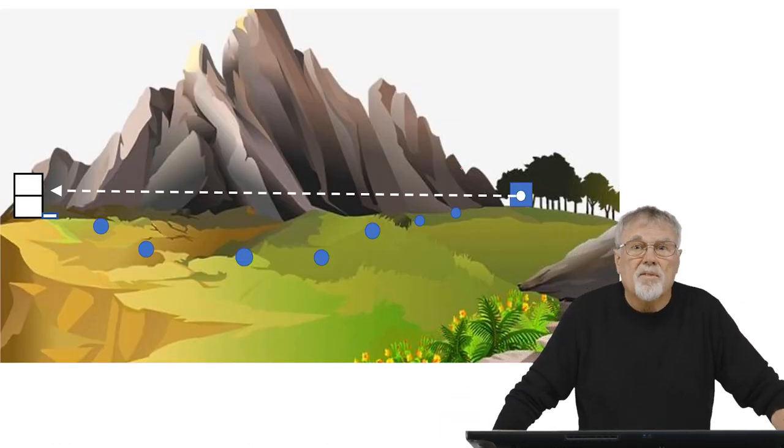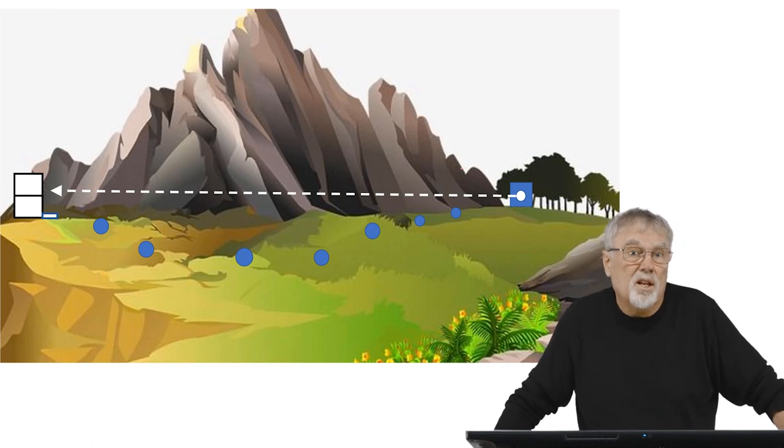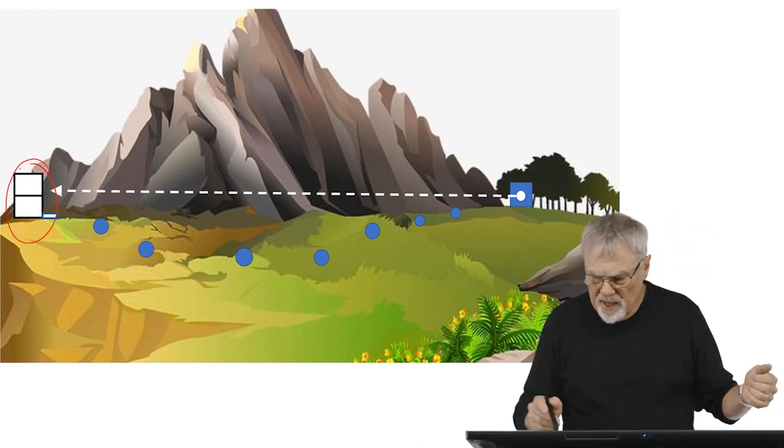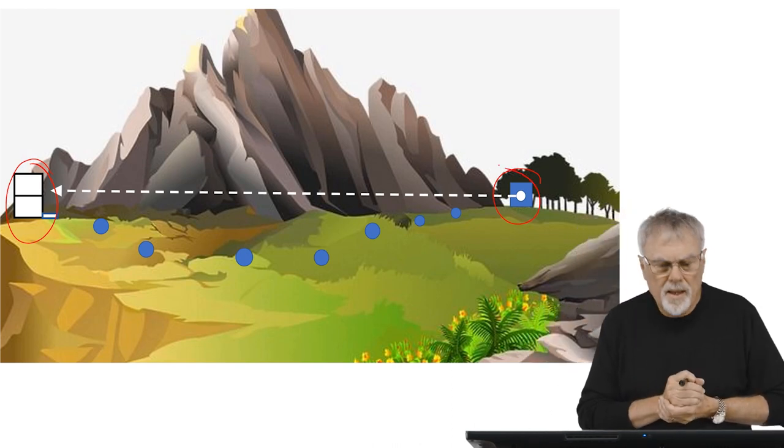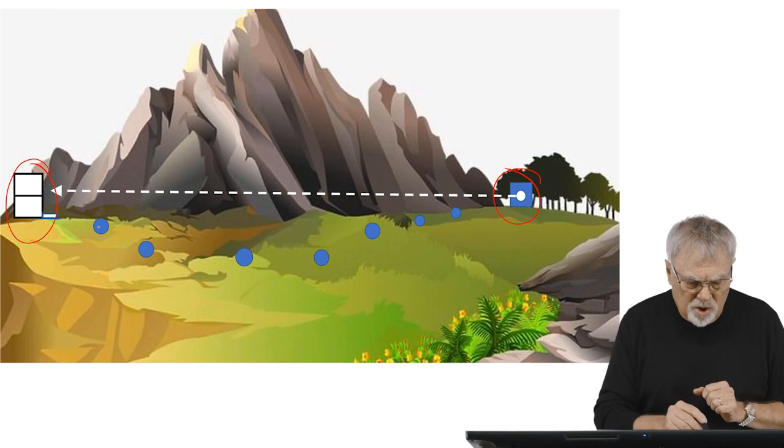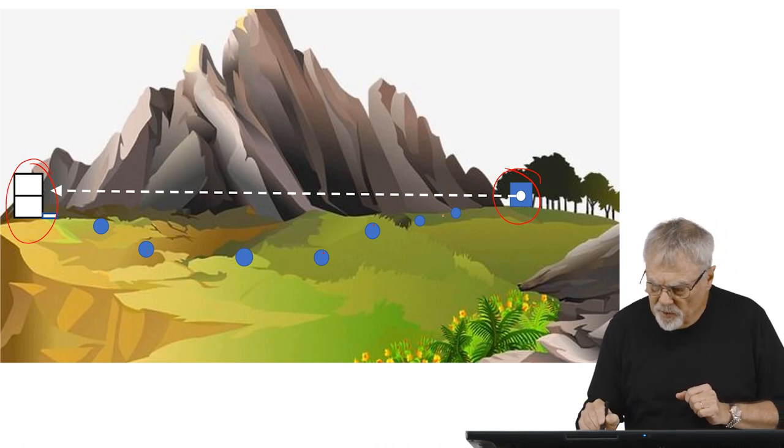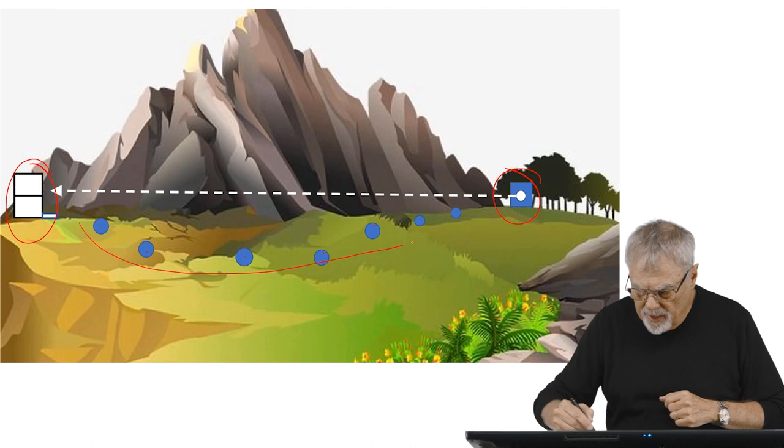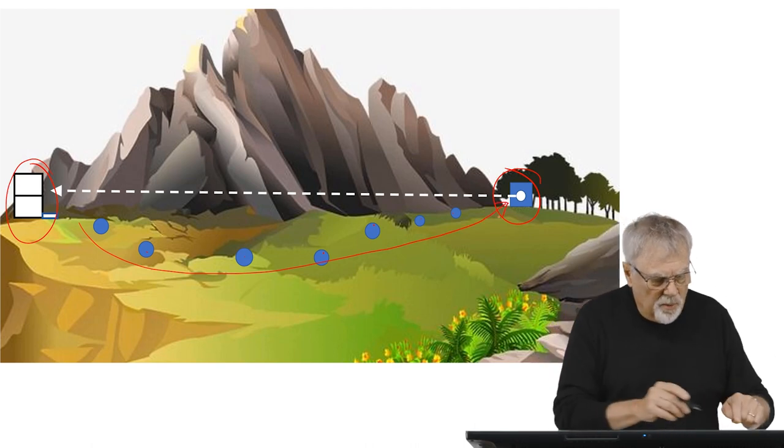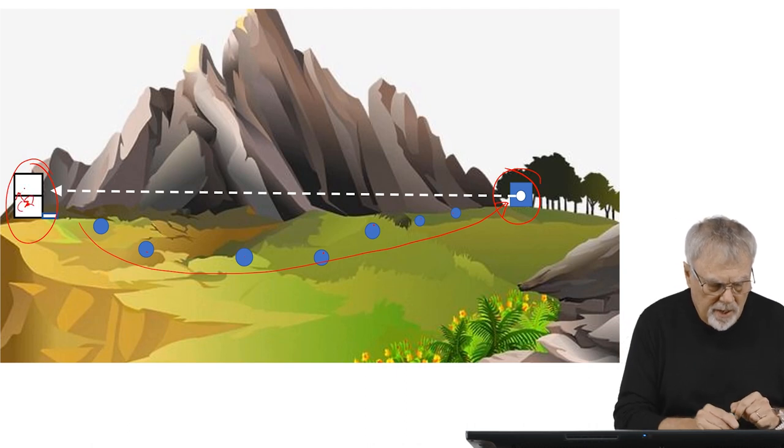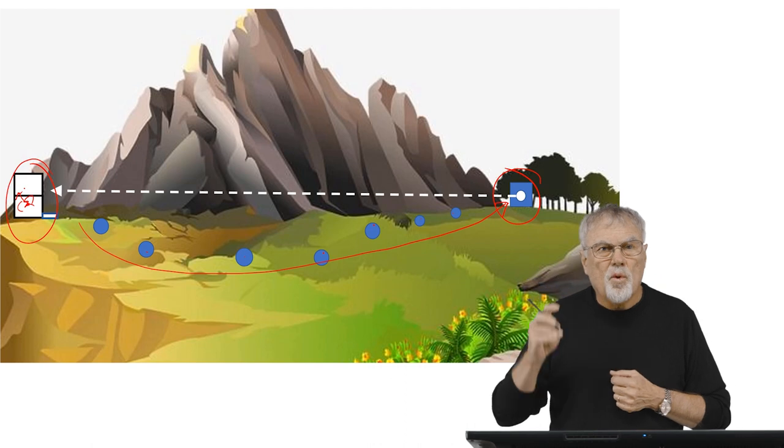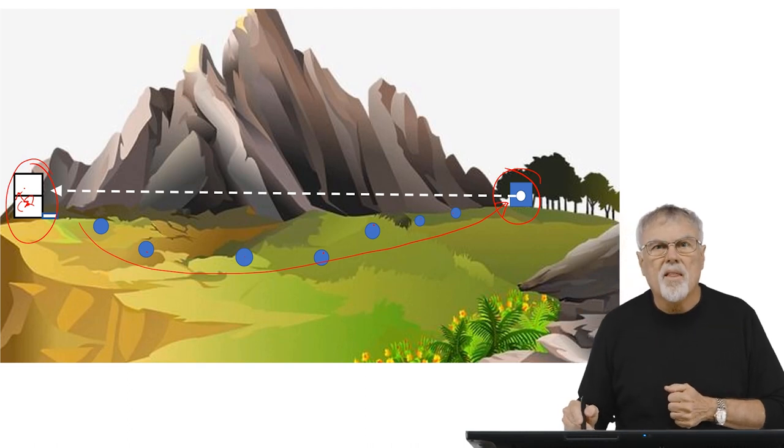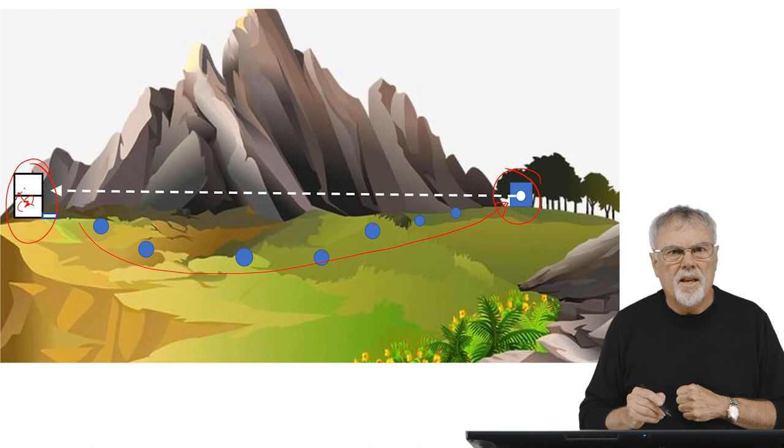This was nicely demonstrated by some of Karl von Frisch's students many years ago. They put an observation hive on one side of a mountain and the feeder on the other side of the mountain. They then trained bees by putting out sugar solution in different places out and around the mountain. They trained the bees to fly around the mountain and to the food source. Then when they went and looked at the dances that were being performed in the nest, the dances showed the correct direction and the correct distance as if they had flown in a straight line through the middle of the mountain. Their path integrators had integrated the path.